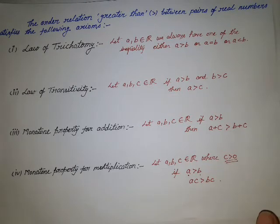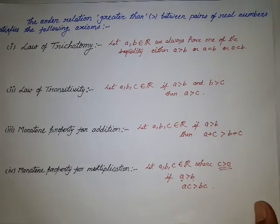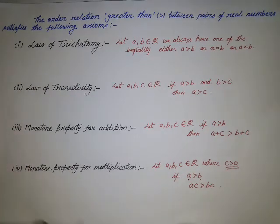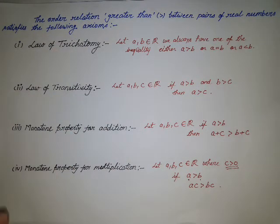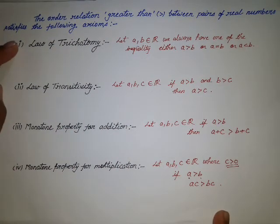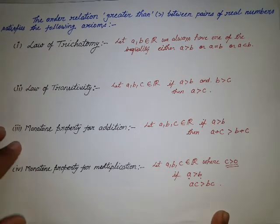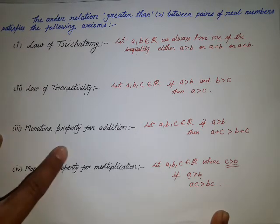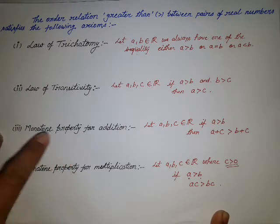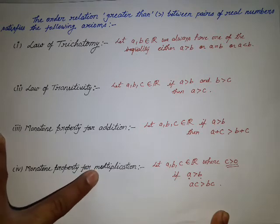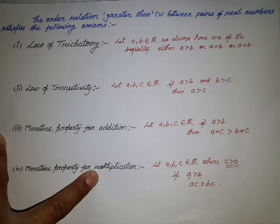So this is the fourth property of the order axiom. In total, we have four properties: the first is the Law of Trichotomy, the second is the Law of Transitivity, the third is the Monotone Property of Addition, and the fourth is the Monotone Property of Multiplication. That is all for the order axiom.